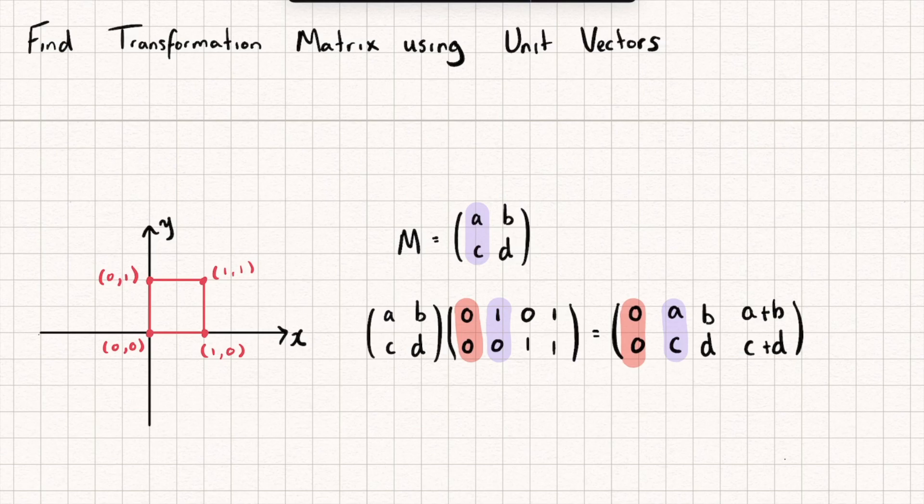And say it moves to the coordinates, I don't know, (0,1). Well then I know that my transformation matrix will have the first column as (0,1).